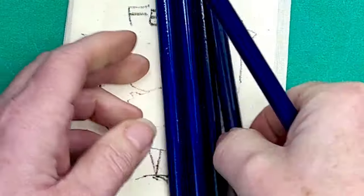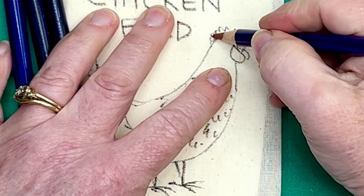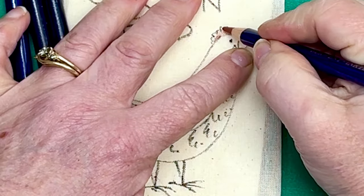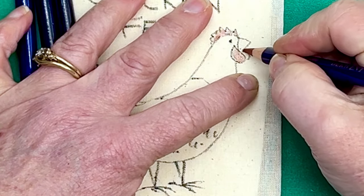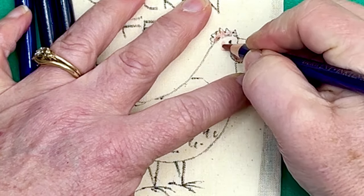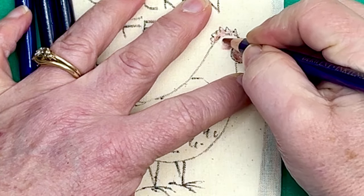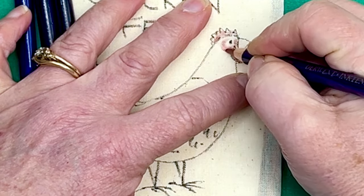So first off, I'm going to go ahead and get in here and color the waddle and the comb. And I'm actually going to put a little bit of this red around the eye like that.